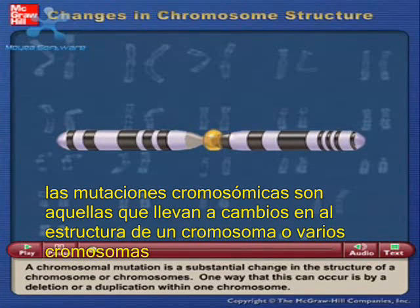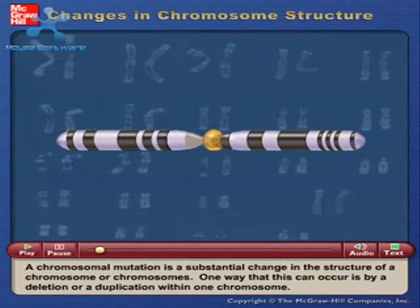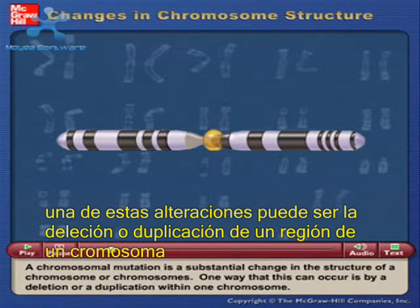A chromosomal mutation is a substantial change in the structure of a chromosome or chromosomes. One way that this can occur is by a deletion or a duplication within one chromosome.